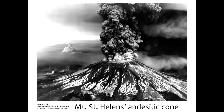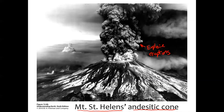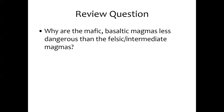Somewhere like Mount St. Helens in Washington state is built out of andesite. You can see one of those andesitic eruptions — this andesitic composition lava is intermediate in composition, and you also notice that this eruption is explosive. Andesitic and rhyolitic composition lavas tend to be associated with more explosive eruptions, whereas basaltic lavas tend to be associated with relatively gentle eruptions. So why are mafic basaltic magmas less dangerous than felsic and intermediate magmas?